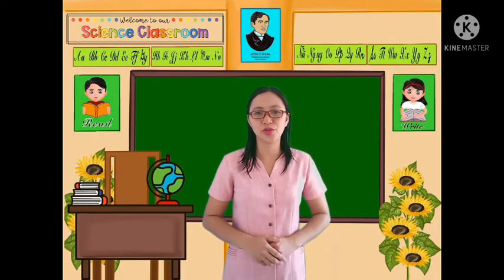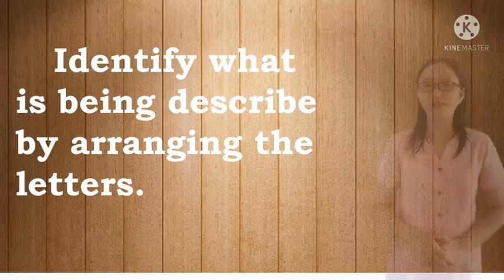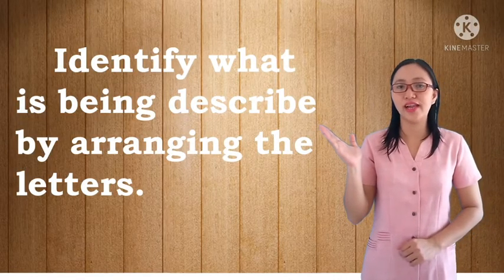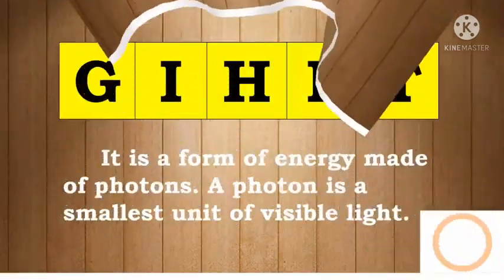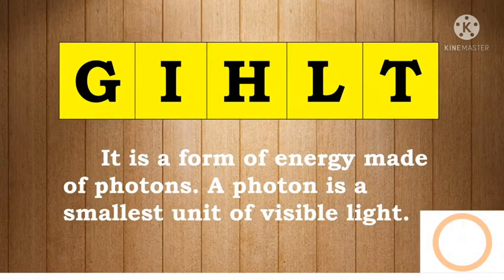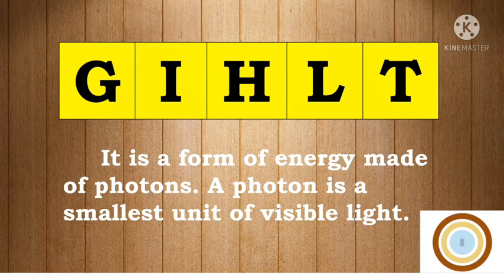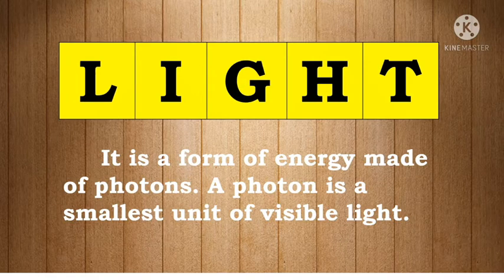Before we go on, let's have a short review. Identify what is being described by arranging the letters. Number 1: It is a form of energy made of photons. A photon is the smallest unit of visible light. The answer is: Light. Very good!